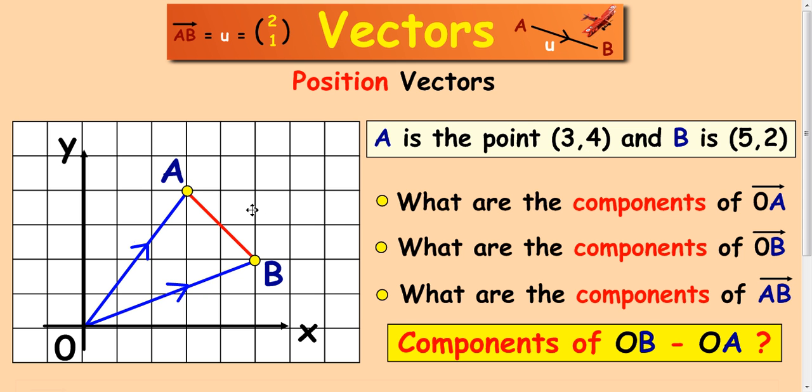If you look at this diagram here, we see that A is the point (3,4) - three along and four up - and B is (5,2) - five along and two up from the coordinates here.